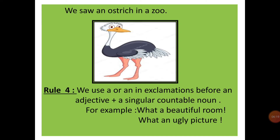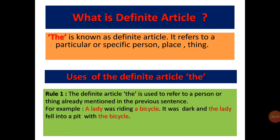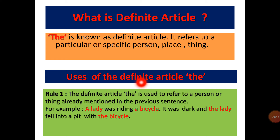Now the next one is definite articles — the. What are definite articles? The is known as the definite article. It refers to a particular or specific person, place, or thing. Now, where do we have to use the definite article, or what are the rules of using this article? We will learn. The definite article the is used to refer to a person or thing already mentioned in the previous sentence. This type of rule we use while reading a story or a paragraph.